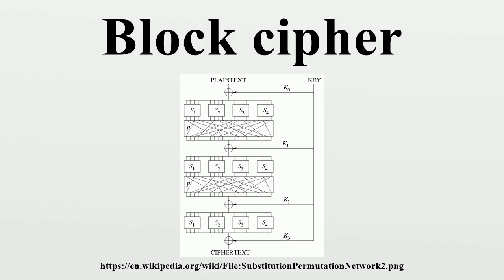Each output bit will depend on every input bit. A permutation box is a permutation of all the bits. It takes the outputs of all the S-boxes of one round, permutes the bits, and feeds them into the S-boxes of the next round. A good P-box has the property that the output bits of any S-box are distributed to as many S-box inputs as possible. At each round, the round key is combined using some group operation, typically XOR. Decryption is done by simply reversing the process.